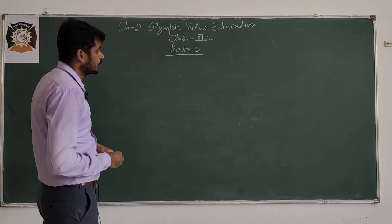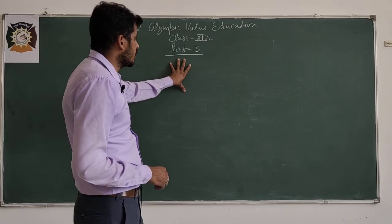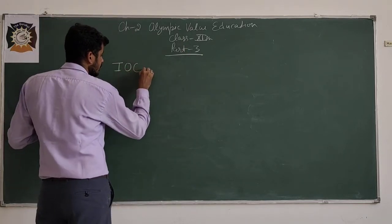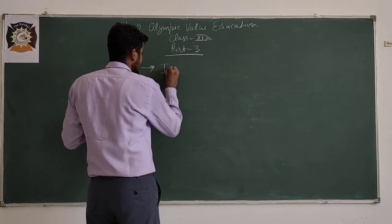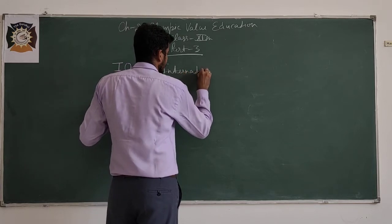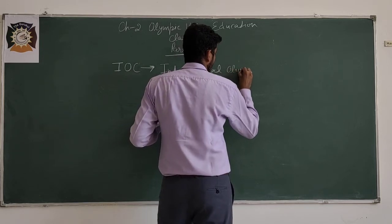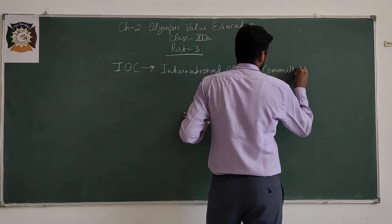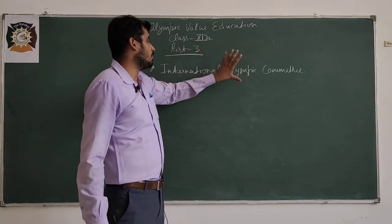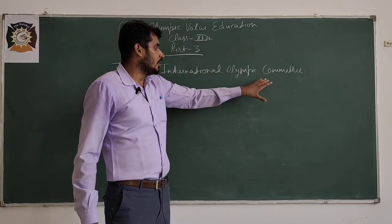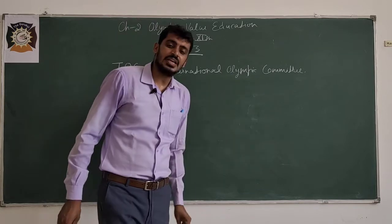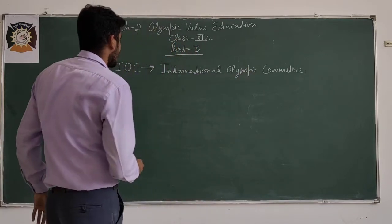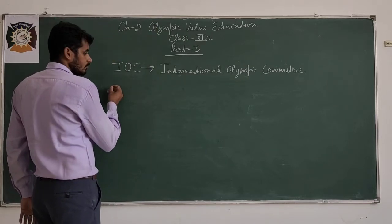So today we will do the upper body of the Olympics which is the organizing body of the Olympic games, that is IOC. IOC full form is International Olympic Committee. With the effort of IOC, Olympic games are organized with a gap of four years in different places.